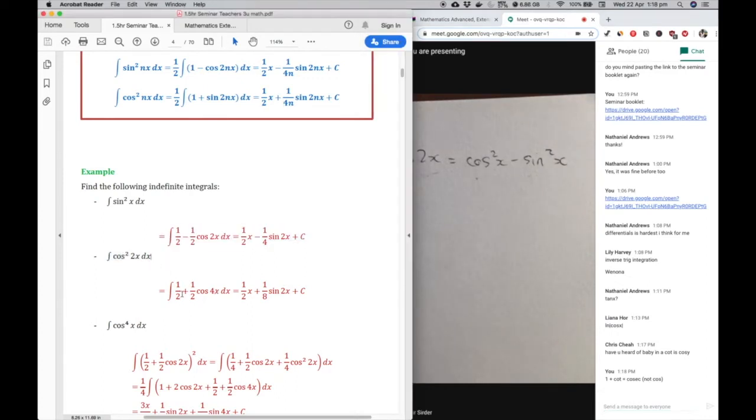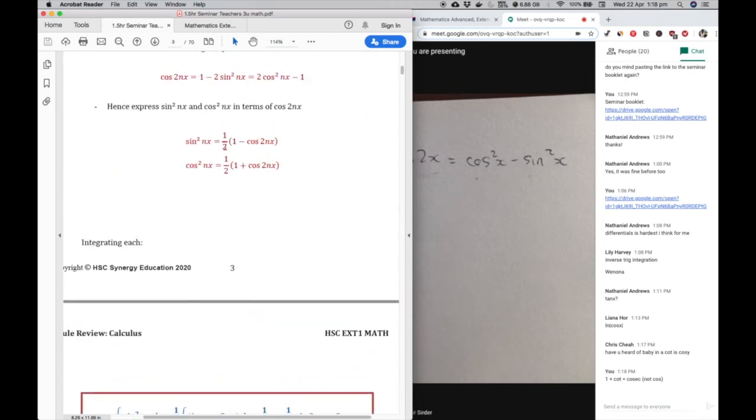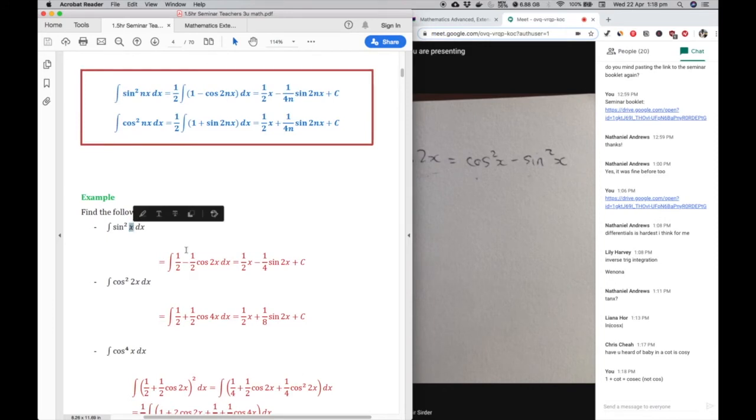Alright, cos squared 2x. Same thing, this time we have a number in here. This time we have a plus, so be careful. We have the half plus half cos 4x. So remember to double the angle. That's a common silly mistake. People forget to double the angle when you're integrating because it actually doubles. So if we have sine x here, we actually turn it into cos 2x. If we have cos 2x here, it turns into cos 4x and so on.